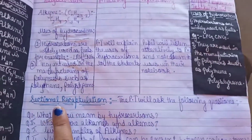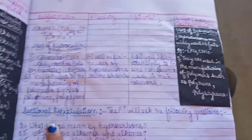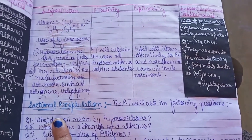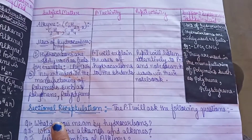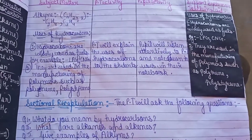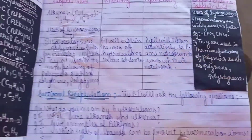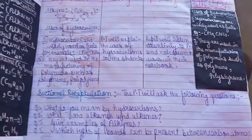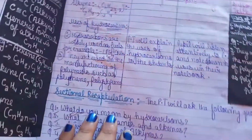Now comes sectional recapitulation. After PT has studied a section, PT will check how many children have understood by asking some questions about what was studied — such as: What is hydrocarbon? What is alkane? What is alkyne? Which bonds are present in carbon? Then PT will continue with the presentation.